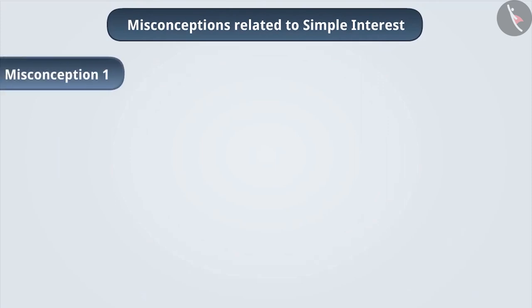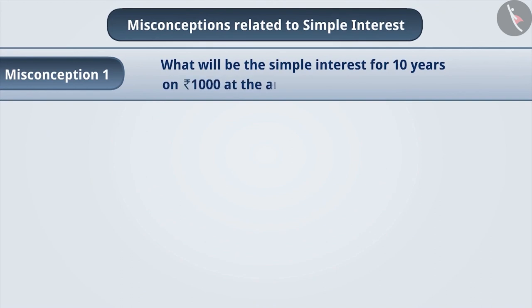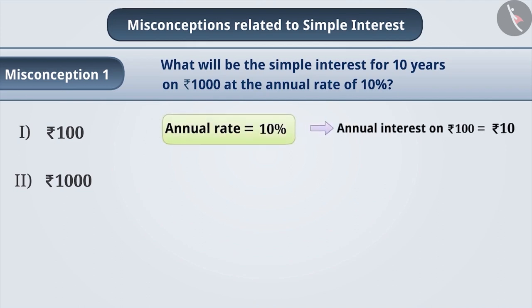Misconception 1. What will be the simple interest for 10 years on Rs. 1000 at the annual rate of 10%? The annual rate is 10%, which means the annual interest on Rs. 100 is Rs. 10.